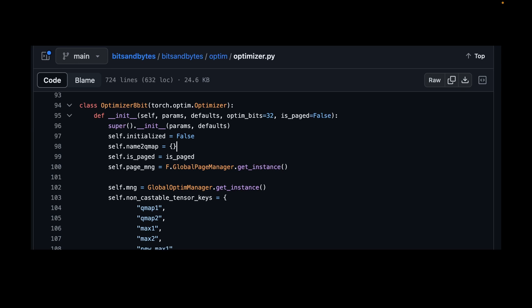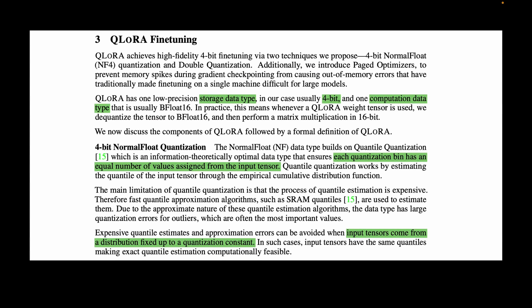Now in terms of implementation, the page optimizers is part of the bits and bytes library, and you can enable or disable it during your QLoRa training by simply setting the flag is paged on or off. Putting together the above-mentioned three components, QLoRa efficiently uses a low-precision storage data type, in our case usually 4-bit, and one computation data type that is usually bfloat16. Now what does that mean?